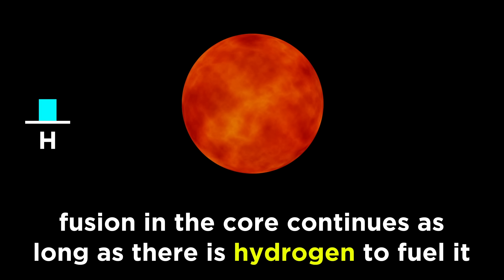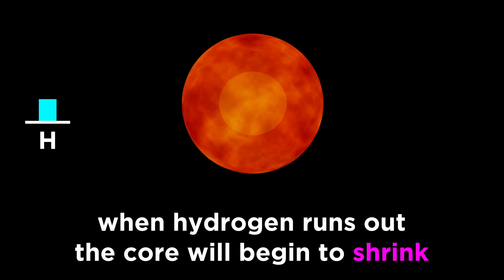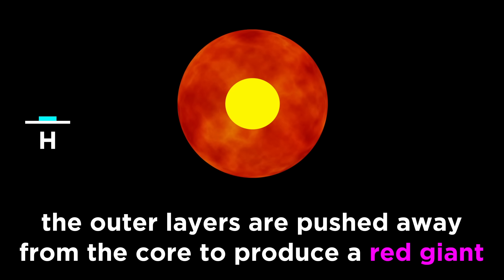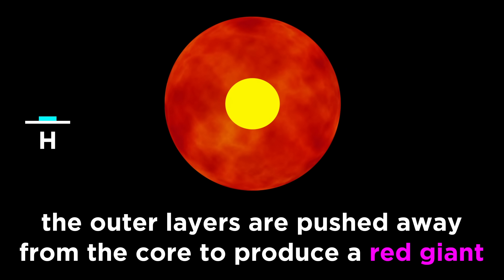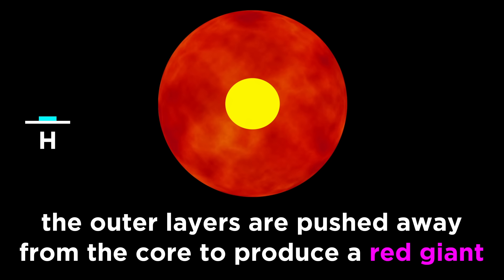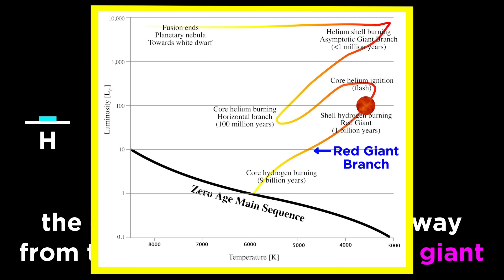At this point, things really begin to change. The core of the star will shrink and get hotter, which makes the remaining hydrogen burn even faster, and all of that extra energy being generated will radiate outwards and push the outer layers away from the core. As the outer layers expand, they cool, and thus become more and more red, and the star climbs up the red giant branch until we have a red giant star.